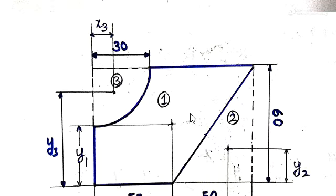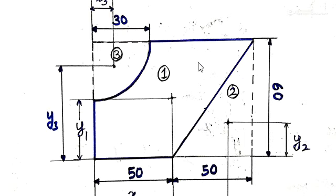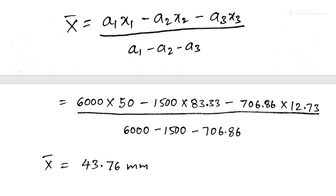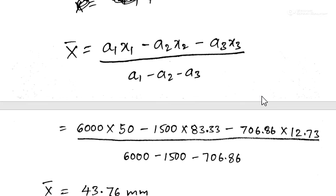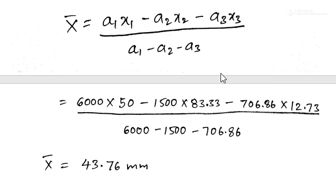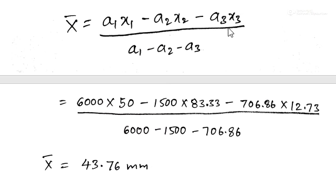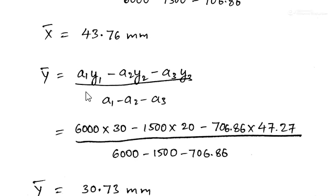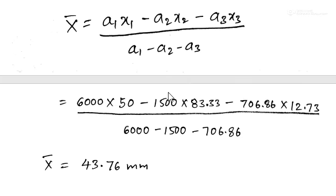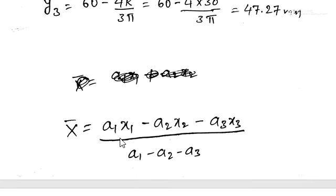By removing the triangle and quadrant areas, we get the shaded portion. For a complex figure, we know the centroid formula as: X-bar = (A1·x1 − A2·x2 − A3·x3) / (A1 − A2 − A3), and similarly Y-bar = (A1·y1 − A2·y2 − A3·y3) / (A1 − A2 − A3), because we are removing areas 2 and 3.